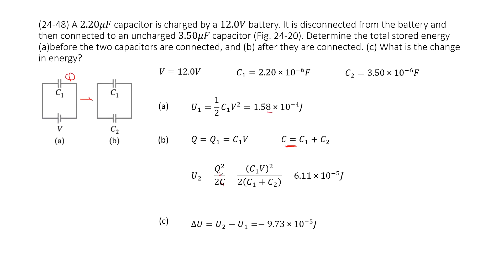The charge in the circuit of C1 and C2 is equal to the initial charge in C1, which is C1 times V. Now Q is given and C is given, so we input Q and C to get the answer. The last part asks for the change in energy: use the final energy minus the initial energy to get the answer.